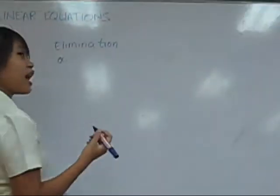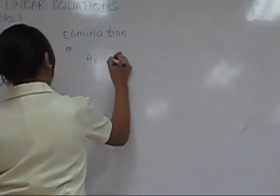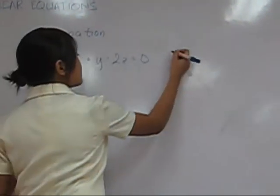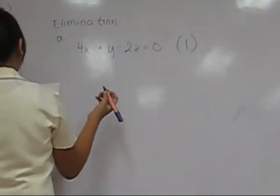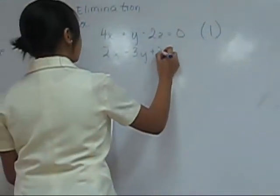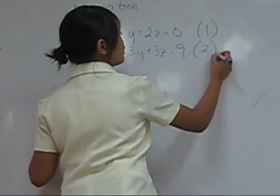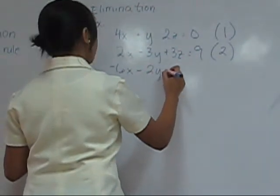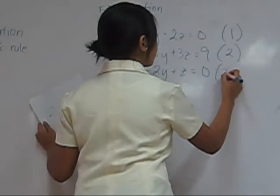For example, you have: equation one: 4x plus y minus 2z equals zero; equation two: 2x minus 3y plus 3z equals nine; and equation three: negative 6x minus 2y plus z equals zero.